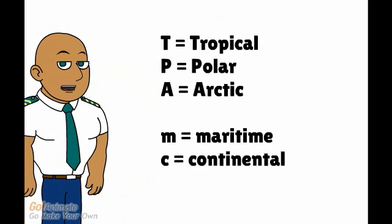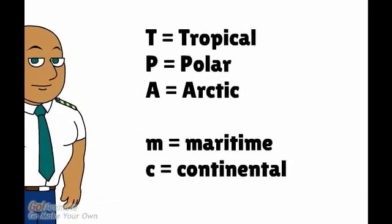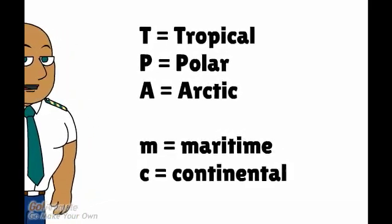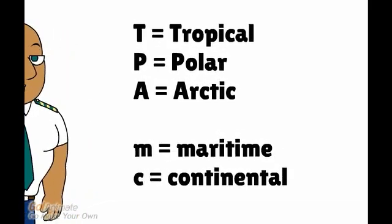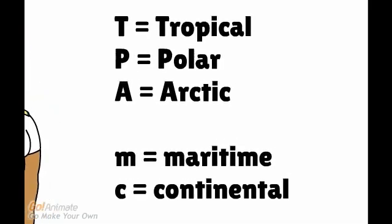The temperature depends on the geographical location of the source region. We distinguish tropical, polar, and arctic air masses that can be either maritime or continental. These letters can be combined — for example, the lowercase m and the capital T makes maritime tropical air.